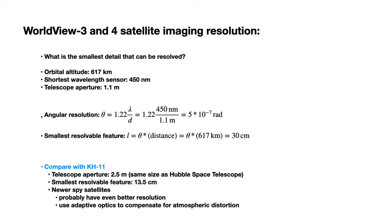Now, how do we convert the angular resolution to the smallest resolvable feature? We need to multiply theta by the distance between the telescope and the object — the orbital altitude of 617 kilometers. Multiplying 5 times 10 to the negative 7 radians by 617 kilometers gets us that the smallest resolvable feature is 30 centimeters, which is exactly the number published for the two satellites.